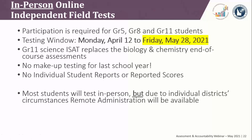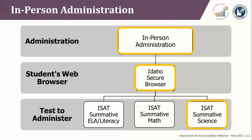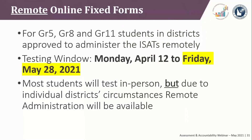It is the SDE's expectation that most students will test in-person, and remote administration will be conducted for extenuating circumstances. For the in-person online IFTs, they are on their own branch of the TA test tree, and for the in-person administration, a student can only use the Idaho Secure Browser to take an ISAT science summative. The remote testing window also closes on Friday, May 28th. Students in grades 5, 8, and 11 in districts that have received approval to administer the ISAT summative remotely will take these online fixed forms.